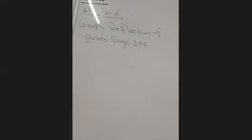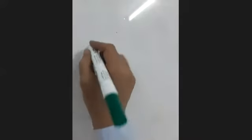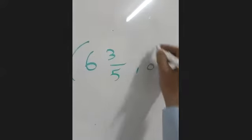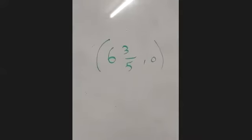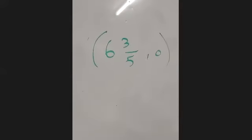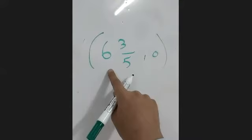Let's go to the question of Abdurrahman before we start our lesson. Page 235, question six. We need to identify the axis on which the point (0, 6 and 3/5) is located. So we have this point — zero and six and three over five.